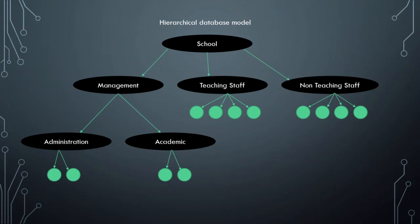Here is an example of a hierarchical model using a school. We can divide it into management, teaching staff, and non-teaching staff. Teaching staff can be further divided into lady staff and other staff. Non-teaching staff can be divided similarly, and management can be divided into administration and academics. Each element has a relationship with the others, forming a tree or parent-child structure.